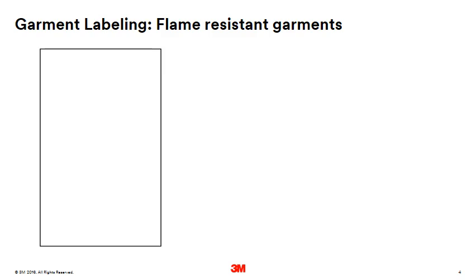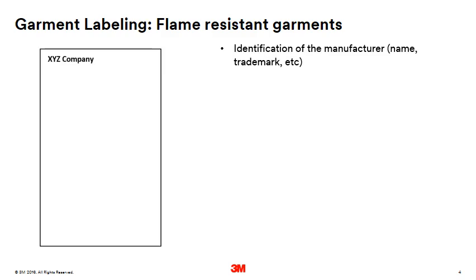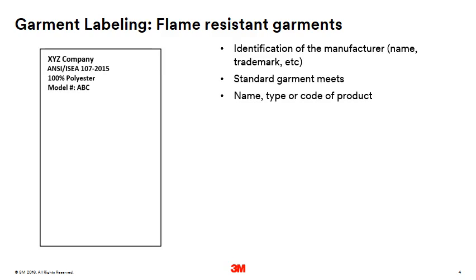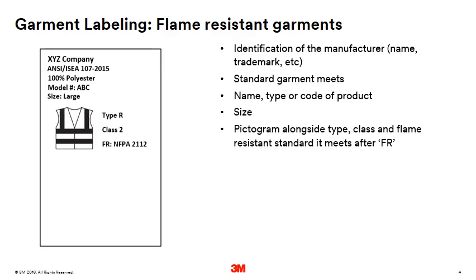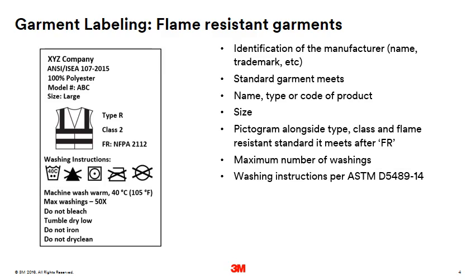Next we will take a look at the requirements for a label on a flame resistant garment. Many requirements are the same as the previous slide: name of manufacturer, trademark, or some other way to identify who made the garment; the standard the garment meets; the name, type, or code of the product; the size; and a pictogram that either depicts the garment or the universal pictogram shown here. Next to the pictogram you also need to reference the type, class, and the flame resistant standard it meets after the letters FR. Also include the maximum number of washes, and finally, washing instructions per ASTM D5489-14.